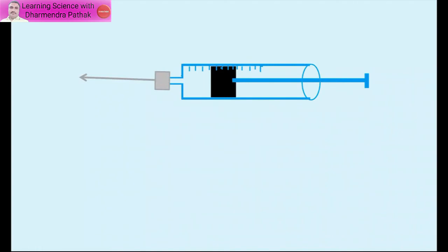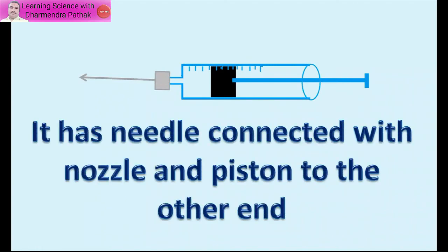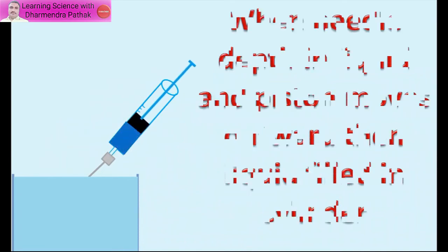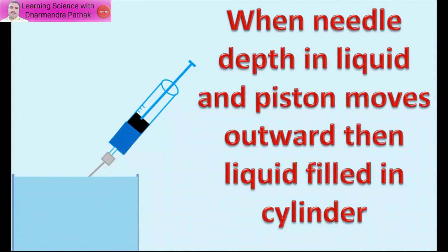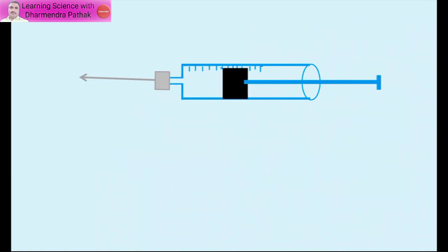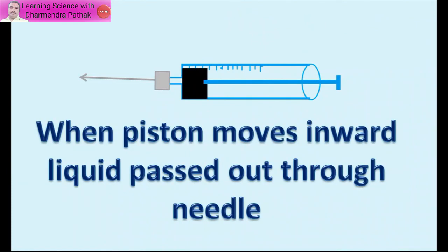It has a needle connected with the nozzle and a piston at the other end. When the needle is dipped in liquid and the piston moves outward, liquid fills into the cylinder. When the piston moves inward, the liquid is passed out through the needle.